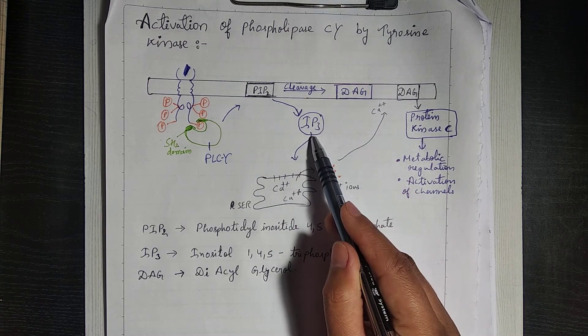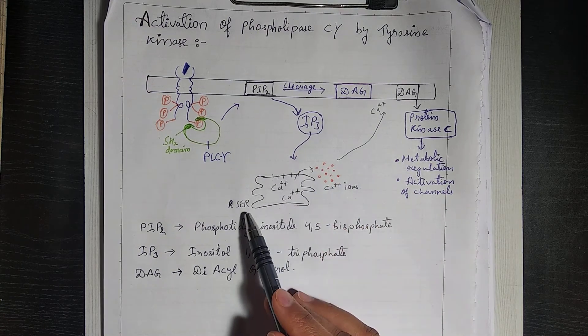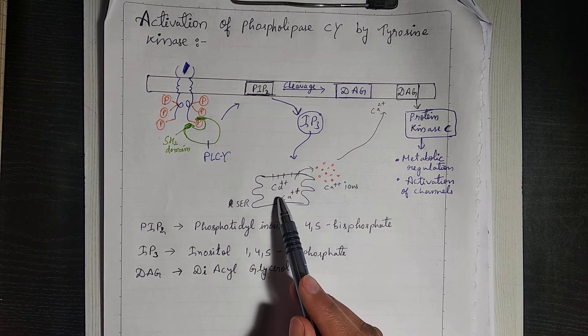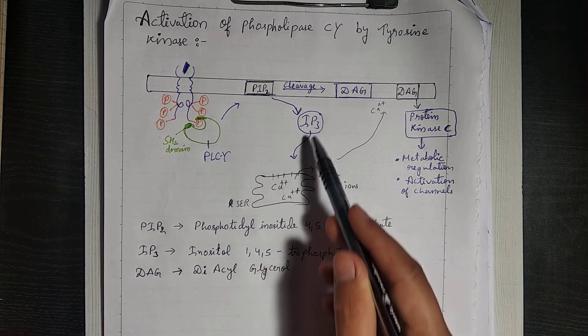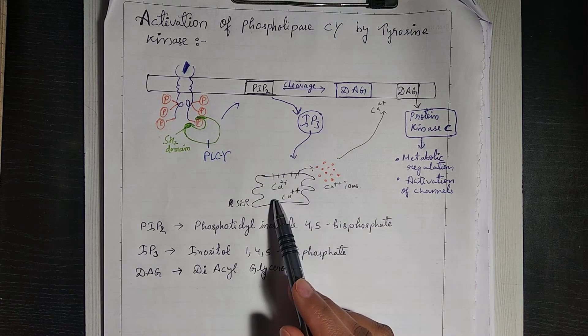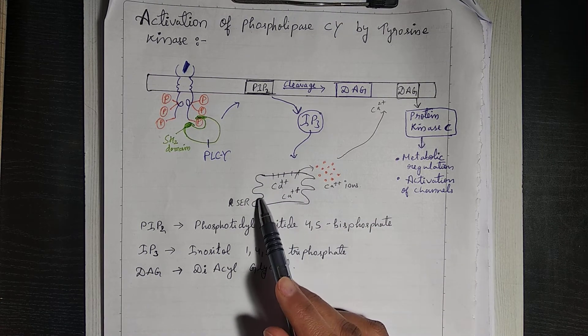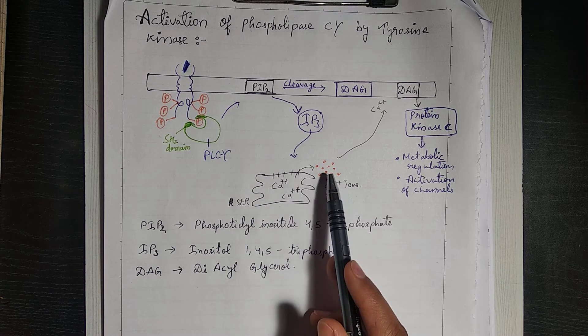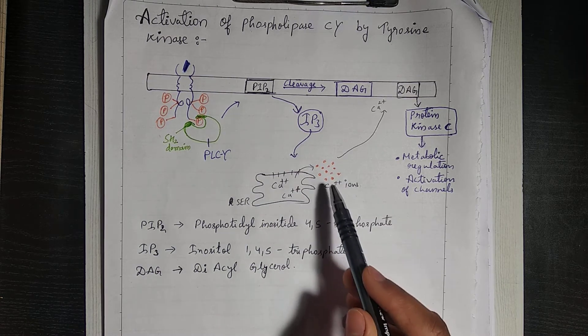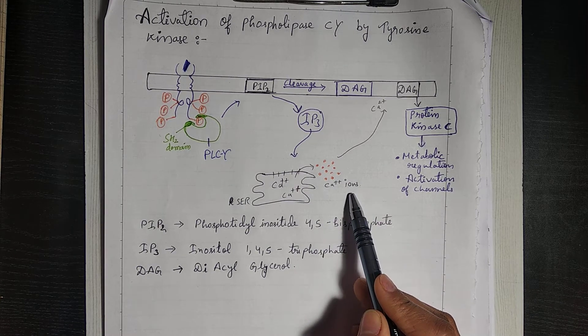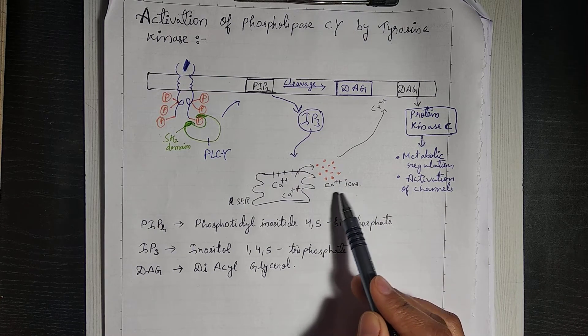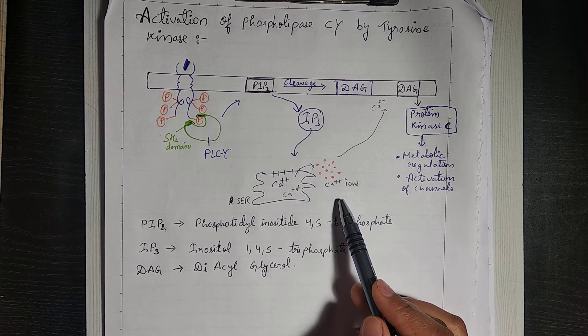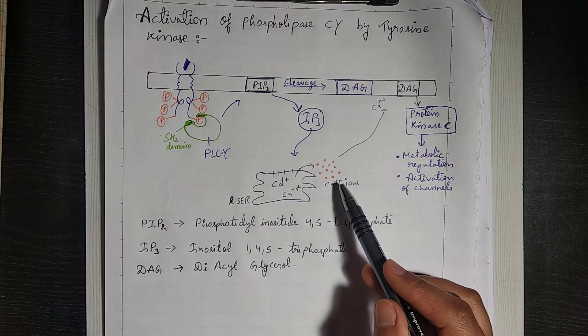IP3 moves to the endoplasmic reticulum which is a storage of calcium ion. IP3 in the smooth endoplasmic reticulum opens the ion channels and calcium releases suddenly in the cytosol. Now we know that if calcium is present in cytosol in a very high amount, then there are many roles and functions of calcium ions which we have already discussed in previous videos.